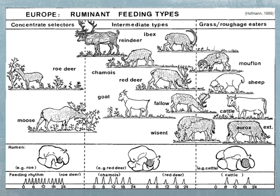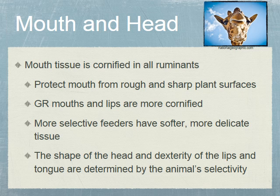Grazers on the right hand side include cattle, elk, bighorn sheep, bison, and domestic sheep. They predominantly consume grass that is high in cell wall components and will eat forbs and shrubs during winter when grass is unavailable. These animals feed less frequently and retain food longer.